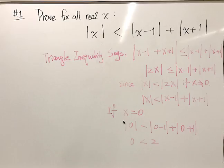And so for that case, we'll check separately. So in the case where x is in fact equal to zero, then the left-hand side of this inequality is just the absolute value of zero. The right-hand side is the sum of the absolute values of plus and minus one and that sum is equal to two. So in the case where x is equal to zero, this is manifestly true.